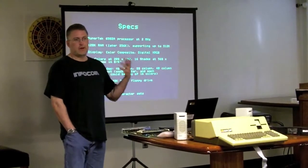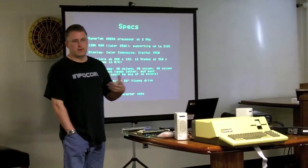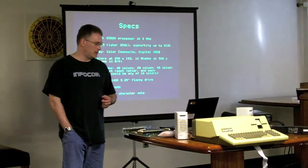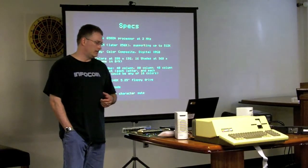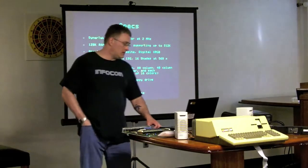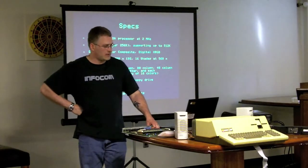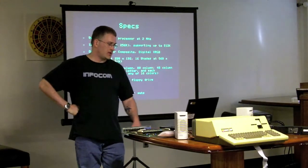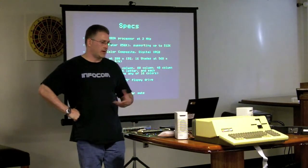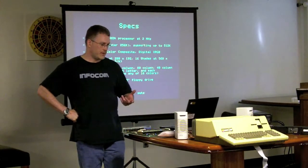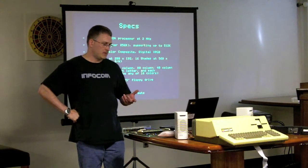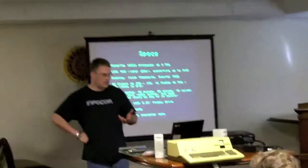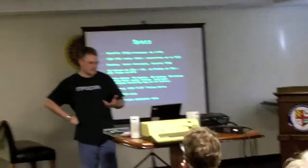There were color modes: 16 colors at 280 by 192, or 16 shades at 560 by 192. There were three different text modes. The 40-column mode, and they also introduced the 80-column mode, which wasn't prevalent before. And then there was a 40-column colored text mode where you could define the color and background for each letter.